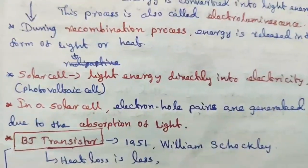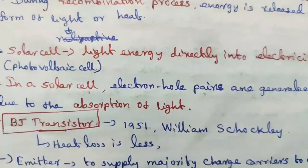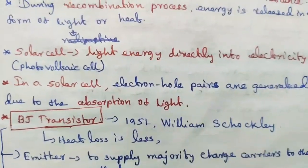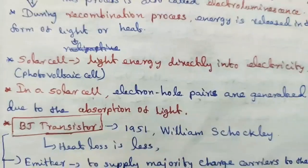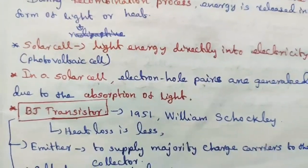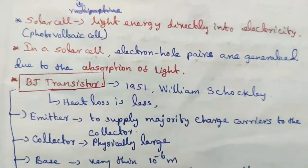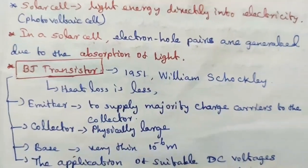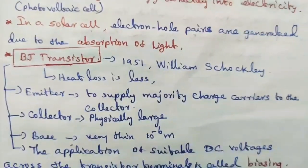BJT transistor, or bipolar junction transistor: in the year 1951, Mr. William Shockley introduced the modern BJT transistor. In BJT transistor, heat loss is less. There are three terminals: emitter to supply majority charge carriers to the collector; collector, which is physically large; and base, with thickness very thin, 10 power minus 6 meter.